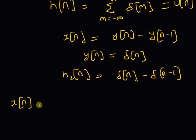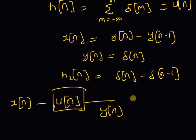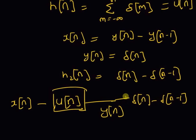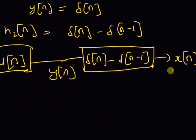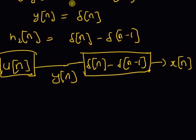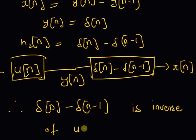Now let us look at the block diagram of these two systems. x(n) goes through a first system whose impulse response is u(n), the unit step sequence, and then the output y(n) goes through a system whose impulse response is delta(n) minus delta(n-1). The final output equals the original input x(n). Therefore, the system characterized by delta(n) minus delta(n-1) is the inverse system of the accumulator with impulse response u(n). Thanks for watching.